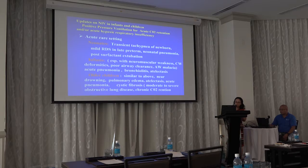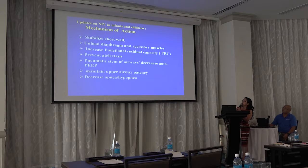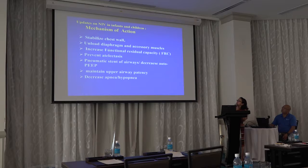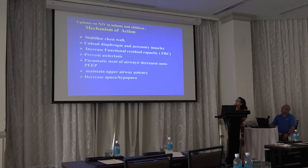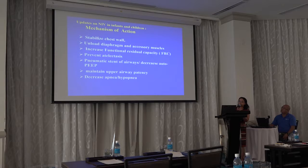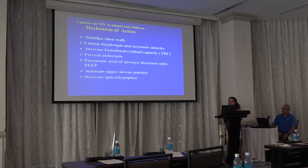The mechanism of action of non-invasive ventilation includes providing chest wall stability, especially for those with neuromuscular weakness. It unloads the diaphragm and accessory muscles for those with stiff lungs or neuromuscular weakness. It increases functional residual capacity by stenting the airways and alveoli, preventing atelectasis. FRC is the amount of air in the lung after exhalation. NIV maintains upper airway patency, extends the upper airway, and decreases apnea and hypopnea in the young age group.